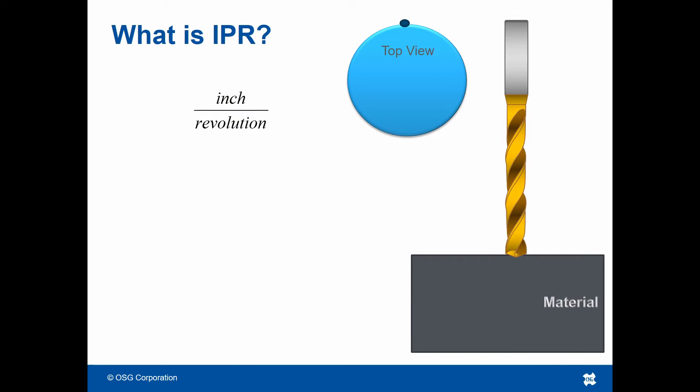IPR means inch per revolution and is how much the drill advances into the material per one revolution. The blue dot on the circle represents the location of one corner of the drill. As it spins around the circle, it represents one full revolution of the drill. By the end of this animation, the drill has fully revolved three times.